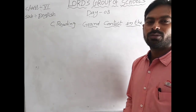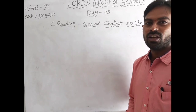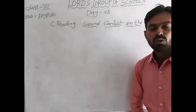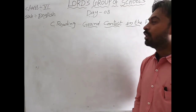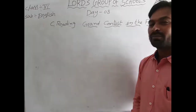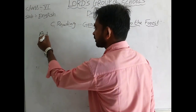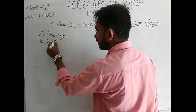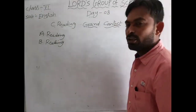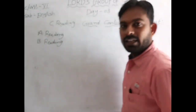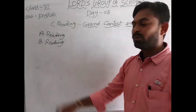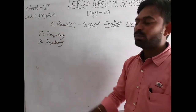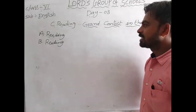Hello children, welcome to Day 8 session of Sixth English. Today we are going to discuss the C Reading lesson 'Grand Contest in the Forest.' Just to remind you, in a unit we have three lessons: A Reading, B Reading, and C Reading. We have already completed A Reading — 'Peace and Harmony' — and B Reading — 'I Want Peace.' Now we are going to C Reading.